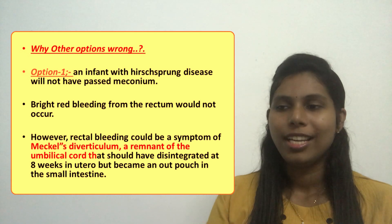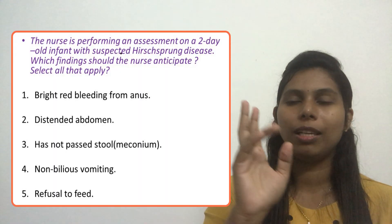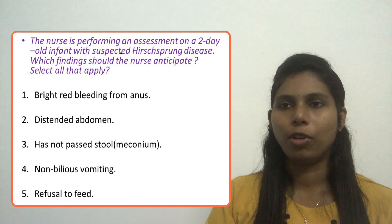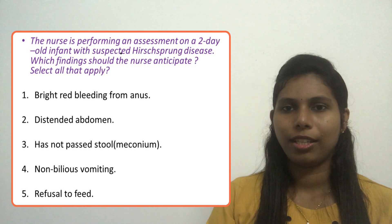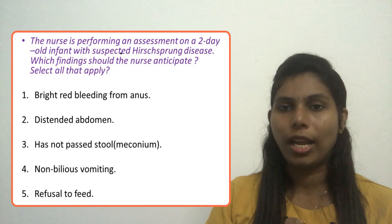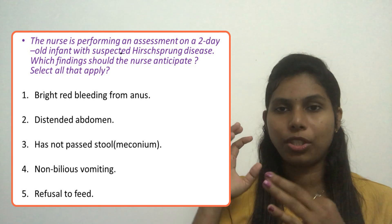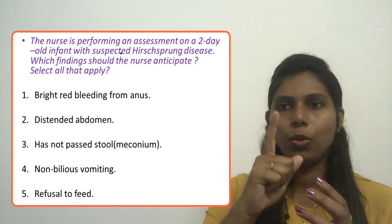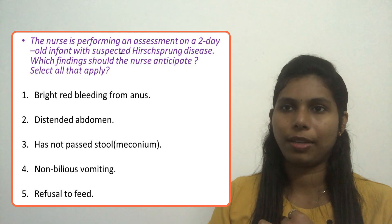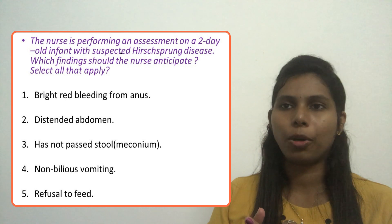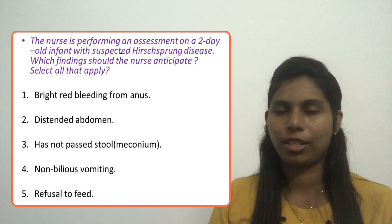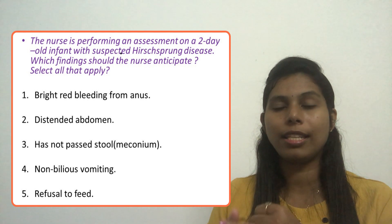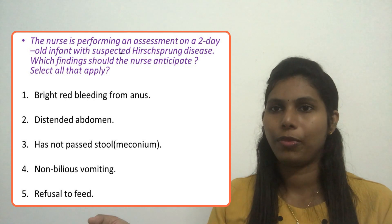Option two — distended abdomen — is correct, because the child will not pass stool, there is no peristalsis, obstruction occurs, and the abdomen becomes distended. Option three — has not passed stool or meconium — is also correct, because the missing nerve cells prevent peristalsis, causing obstruction and failure to pass stool.